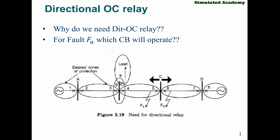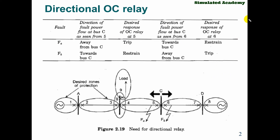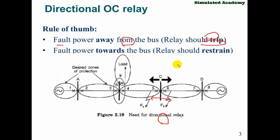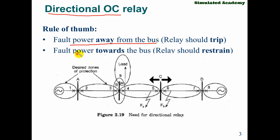So this is the thumb rule. If fault current is away from the bus, that relay operates — it should trip. Whichever relay has current towards the bus — for example relay 6 — it needs to restrain for fault F6. Away from the bus — relay 5 — it must operate. Similarly for fault FB, away from the bus current causes operation; towards the bus means restrain.